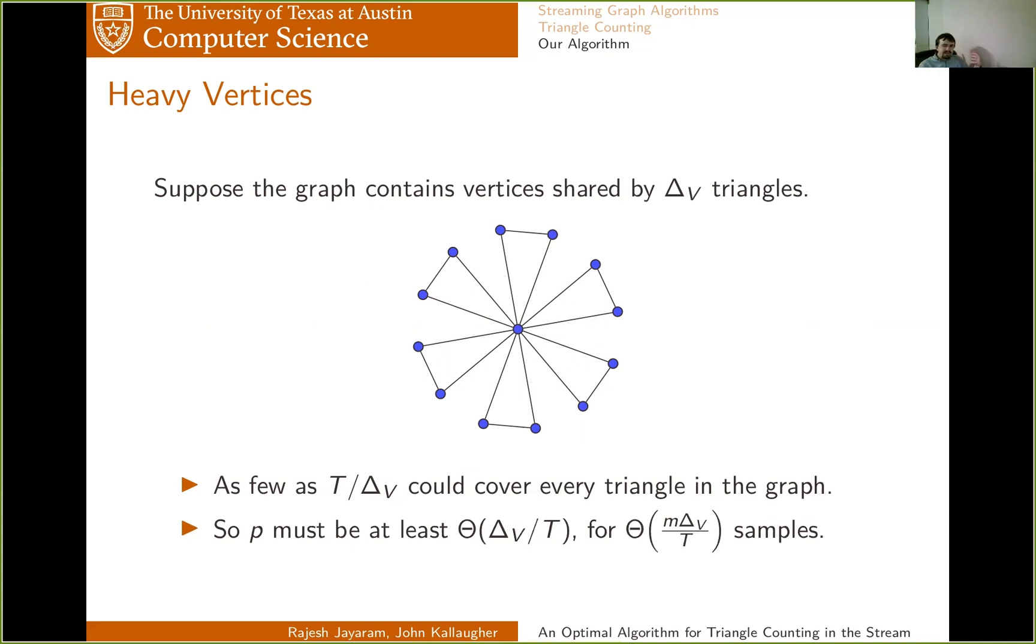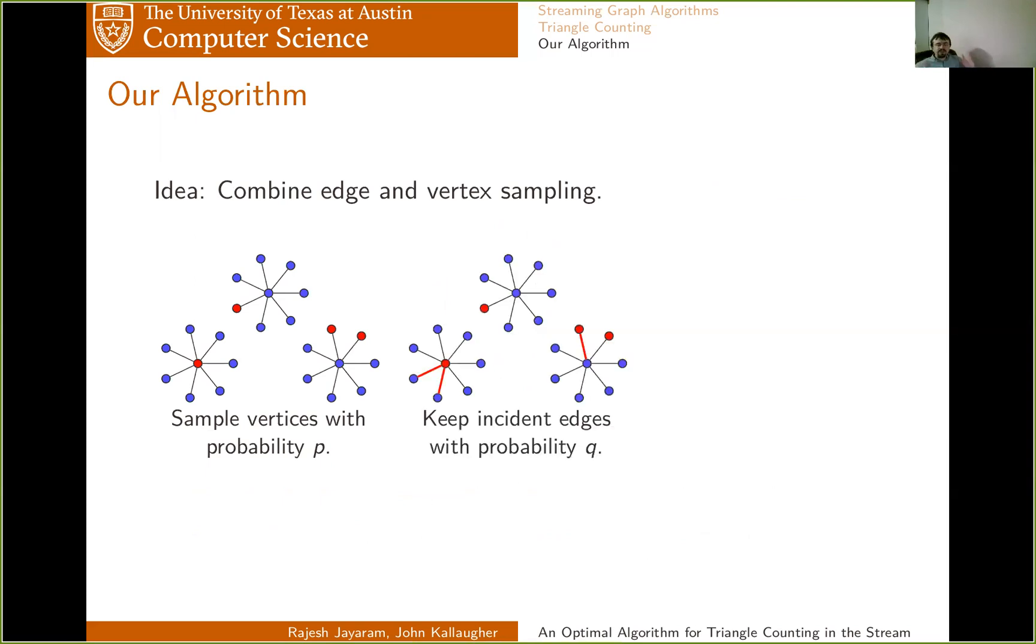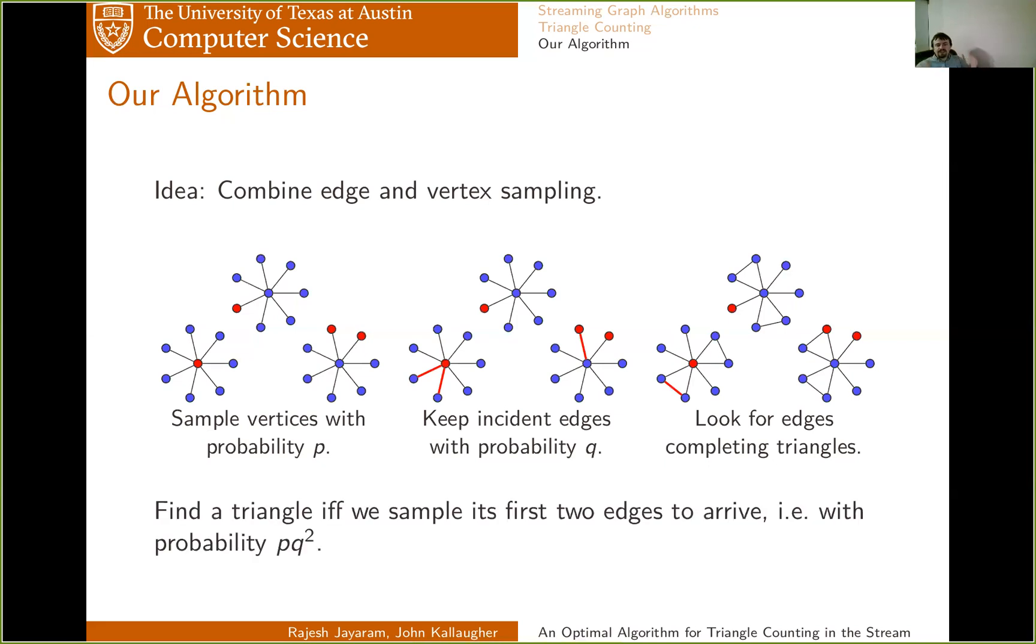So our algorithm can be seen as a hybrid of these kind of two extremes of ways of sampling edges. Our idea is you first sample vertices with probability P. Then, when you see an edge incident to a vertex, you sample it with probability Q. And then again, you look for edges that complete triangles. Now, you will find a triangle if, for the first two of its edges to arrive, you sample the vertex that they intersect at, and you sample both of them. So with probability P, and then with probability Q squared, if you've sampled the vertex. So, after you've got your count, you'll multiply it by one over PQ squared.